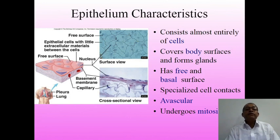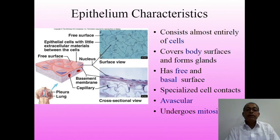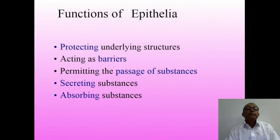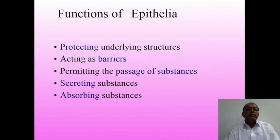Epithelium reveals certain characteristics in our organs. These characteristics are: they consist almost entirely of cells, they cover the body surface, they form a variety of glands, having a free surface, having specialized cells, no blood vessels, and they are able to regenerate cells. Functions of epithelium: it provides protection, it acts as a barrier, avoids invasion — for example, our skin — permitting the passage of substances to enter. It is also a secretory device and an absorbing device.